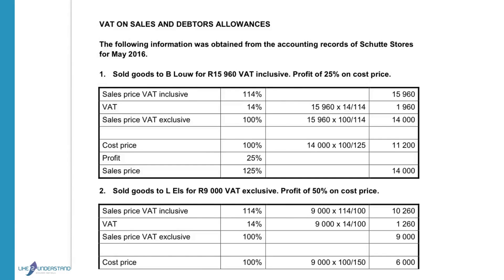Goods were sold for 15,960 VAT inclusive. That means 15,960 equals 114% because it includes the VAT. There is a profit of 25% on cost price, so the cost price will be 100%. The sales price VAT inclusive is 114% and the figure given is 15,960.